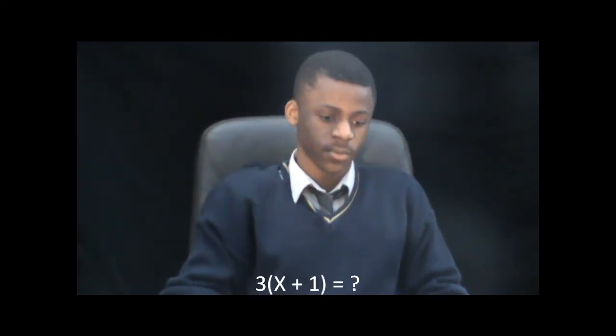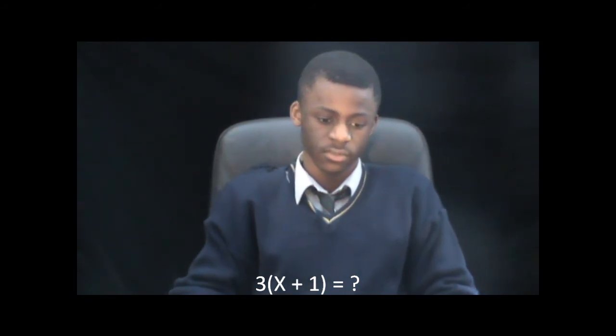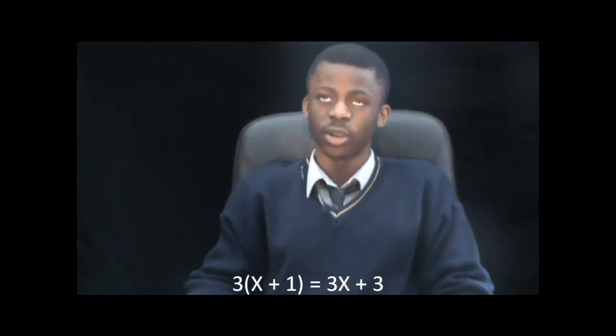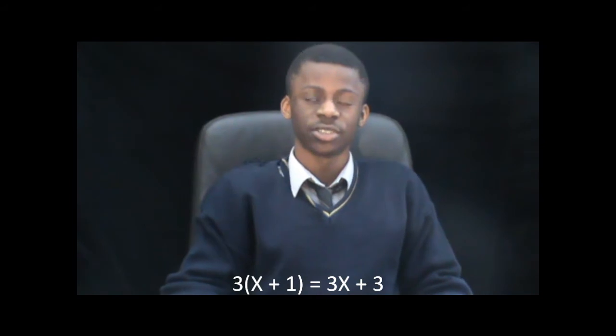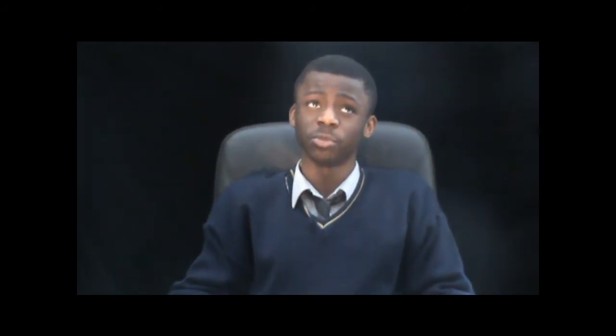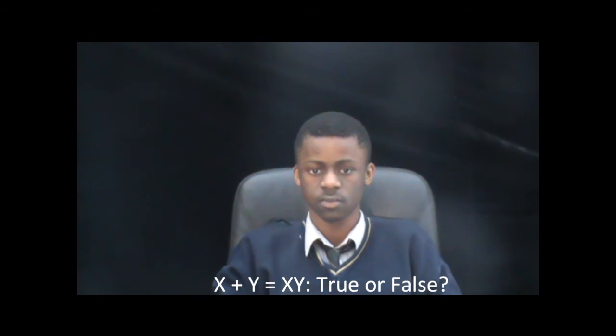Correct. Question 3: 3 bracket X plus 1 close bracket equals 3X plus 3. Because you're meant to multiply the 3 by the X and by the 1. Correct. Question 4: X plus Y equals XY — true or false?